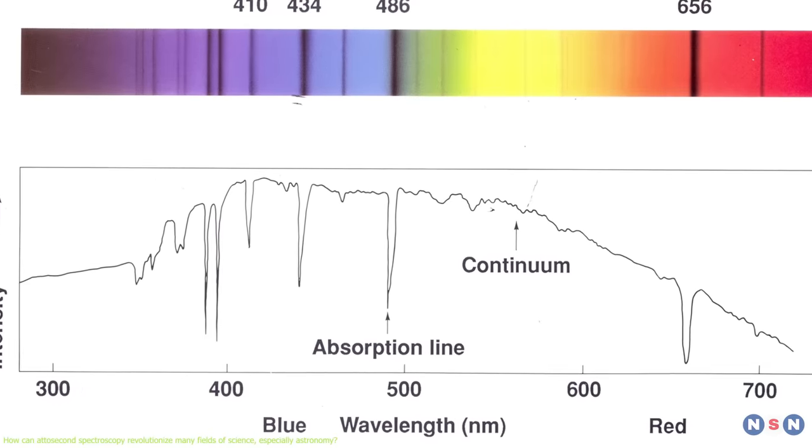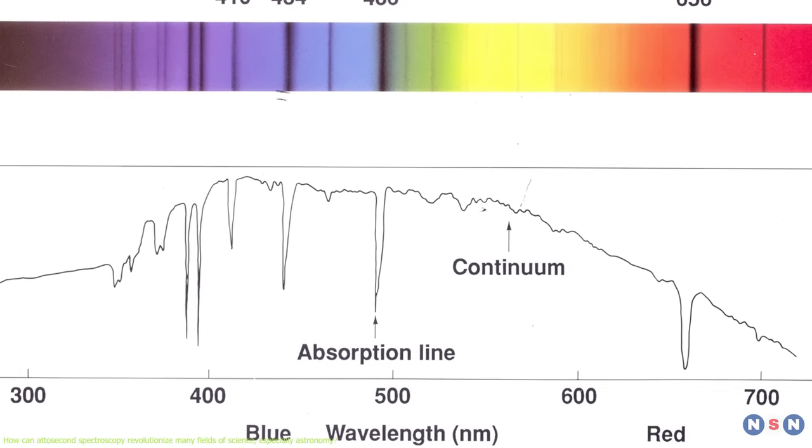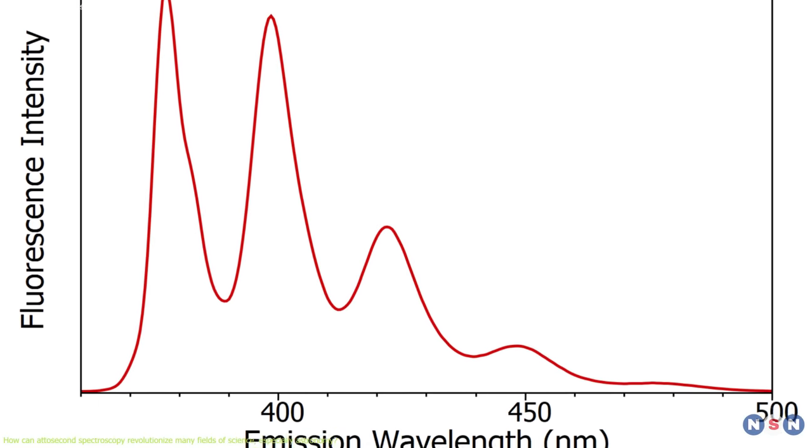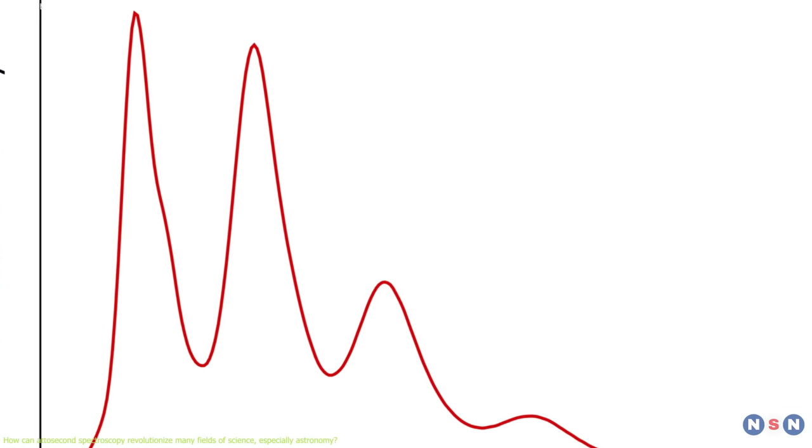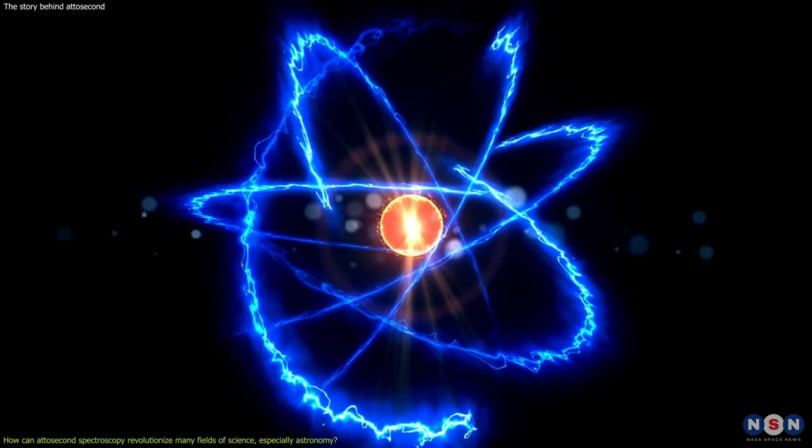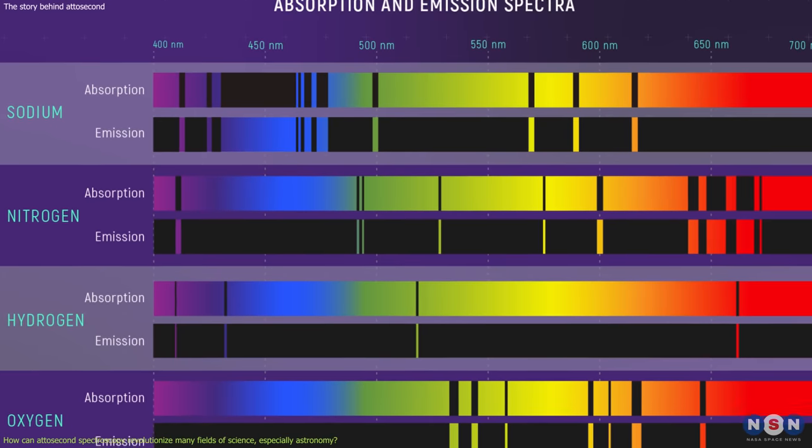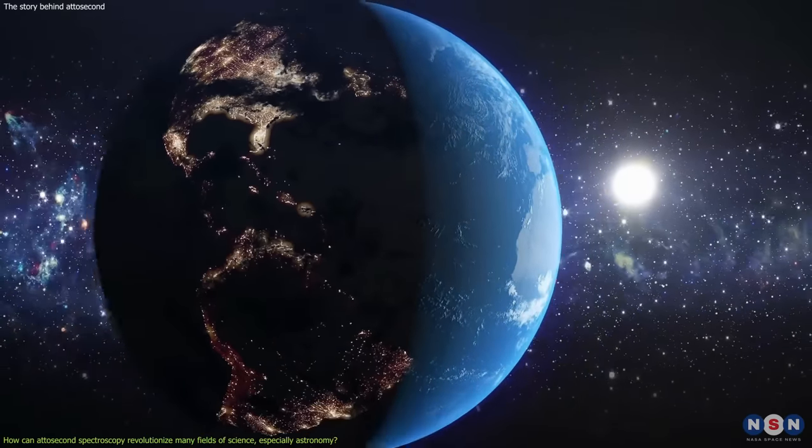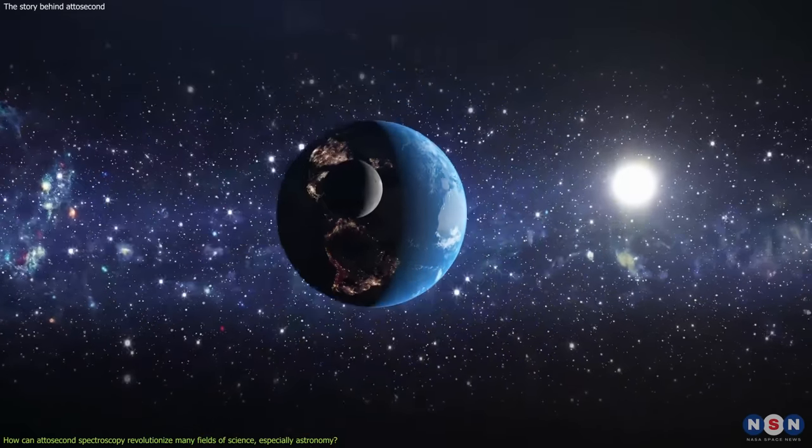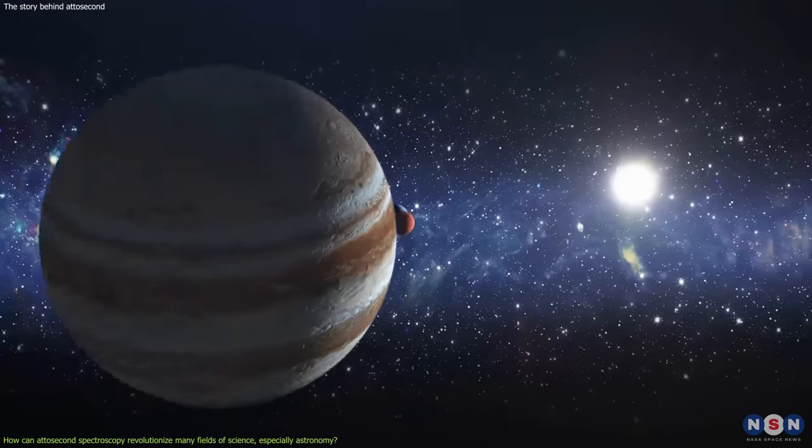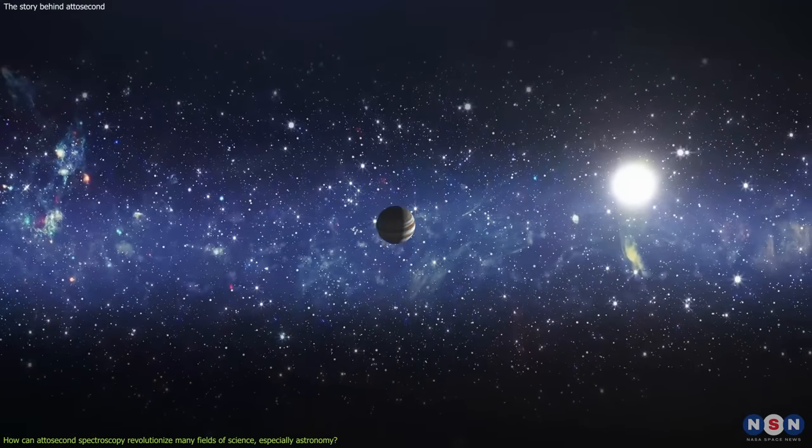Spectra are graphs that show how much light is emitted or absorbed by an object at different wavelengths or frequencies. Emission lines are bright peaks in spectra that correspond to specific transitions of electrons in atoms or molecules. By analyzing spectra and emission lines, we can determine the chemical composition, temperature, pressure, density, velocity, magnetic field, and other physical properties of celestial objects.